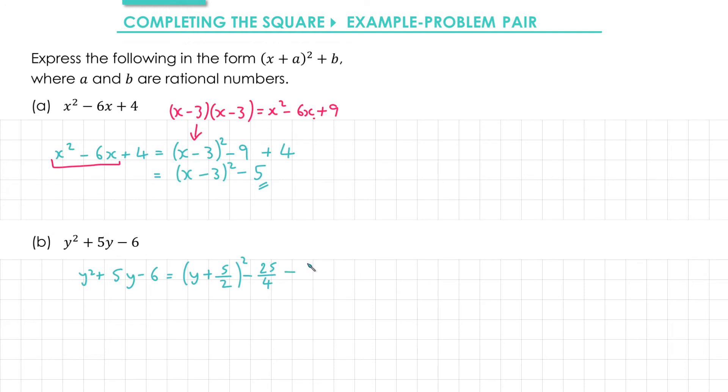But instead of writing 6 here I'm going to write 6 as 24 over 4. The reason I've done that is so that when I'm tidying up on the next line. So I've got y plus 5 over 2 squared. Both of these fractions have the same denominator so it's much easier to simplify. We've got minus 25 over 4 minus 24 over 4 gives us minus 49 over 4.